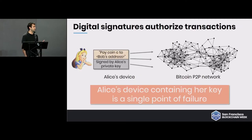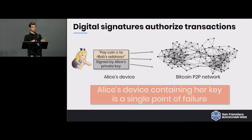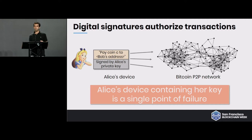Digital signatures — transactions in Bitcoin or really any cryptocurrency system — are authenticated by digital signatures. What that means is if Alice wants to send Bob some money, Alice will sign a transaction that says 'pay this coin C to Bob' and she signs that transaction with her private key. Now notice that Alice's private key is a single point of failure. Anyone who attacks or compromises Alice's device will learn her private key and can now send money to whoever they like, and that's a bit of a problem.